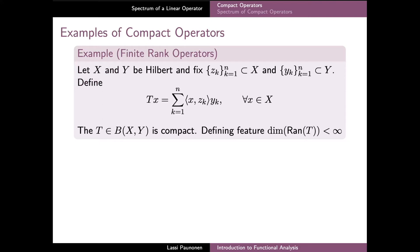We can now take a look at some examples of compact operators. If X and Y are Hilbert spaces and we have two sequences of elements zeta_k and y_k, we can define an operator T with the formula shown here. In each of the terms we multiply the vector y_k with the inner product of the vector x and zeta_k. This operator is linear and bounded and it also turns out to be compact.